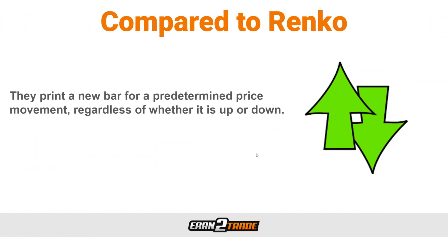Renko charts are not nearly as popular as the other options out there, but there are definitely a large group of traders that still like to use them. These are charts that print a new bar for a predetermined price movement, regardless of whether it's up or down. For example, we can set a Renko chart to create a new bar each time the traded instrument moves 50 points — up or down.